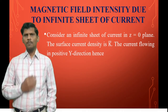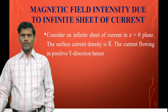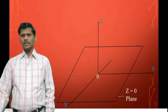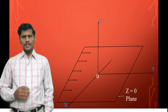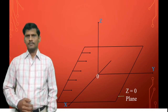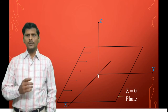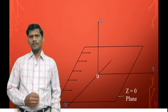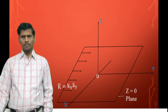The current is flowing in the positive y-direction. So the infinite sheet of current is placed in the z=0 plane, that is the XY plane. The surface current density K̄ is equal to Ky·āy, where the current is flowing in the positive y-direction.